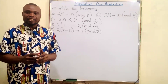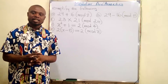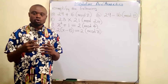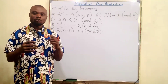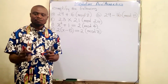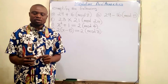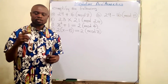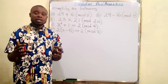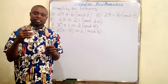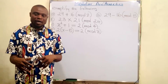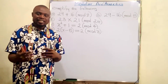First, I'm going to define what modular arithmetic is before we jump straight into solving the questions. Modular arithmetic is an operation that gives a remainder when an integer is divided by a fixed non-zero integer. In another way, modular arithmetic is the operation that gives a remainder when a number is divided by a fixed number.